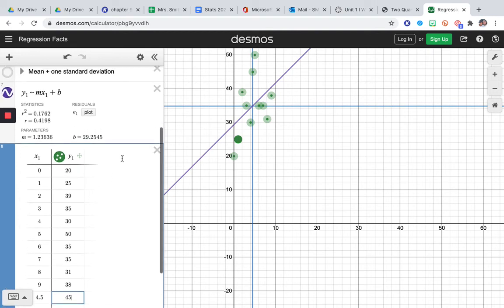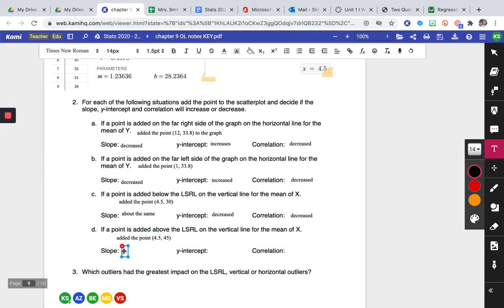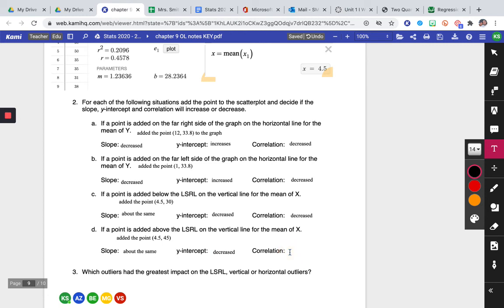So slope is still about the same, about 1.24. The y-intercept was at 28.24, now it's at 29, so it increased. And then the correlation was at 0.45 and it's now at 0.41, 0.42, so it decreased as well. So the slope about the same, the y-intercept decreased, and the correlation decreased.